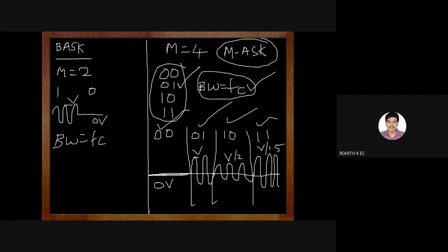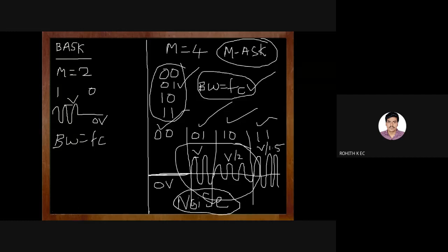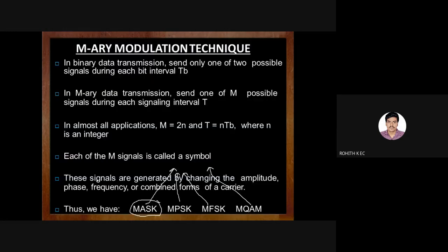M-ary modulation techniques enhance data transmission capability by keeping bandwidth the same while increasing data rate. However, in practical applications, depending on the communication channel, we choose between M-ASK, M-PSK, or M-FSK carefully, because noise affects signal amplitude. A noise impact on V or V/2 signals could shift them to wrong levels, so the type and amount of noise in the channel must be considered when selecting an M-ary modulation technique.